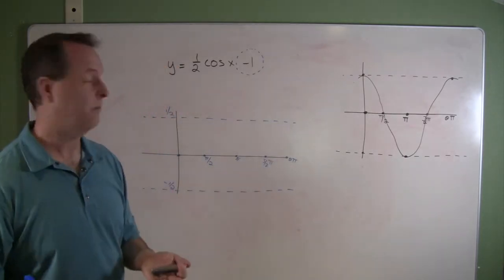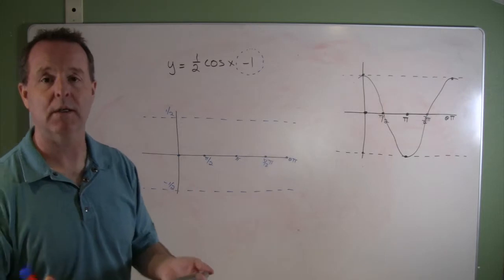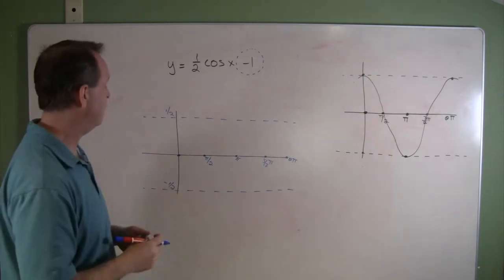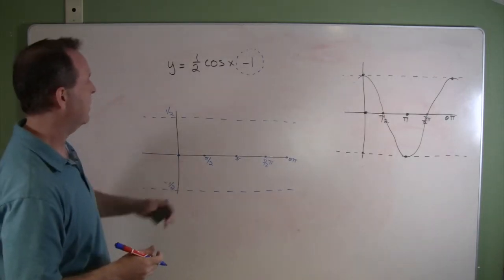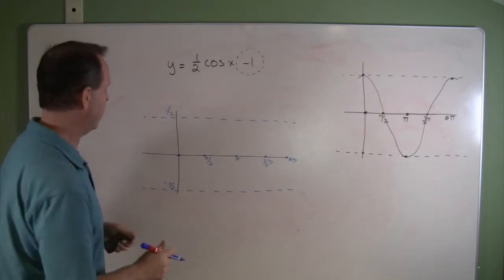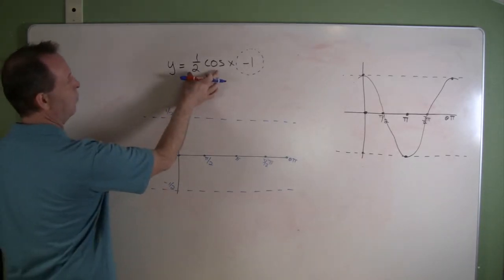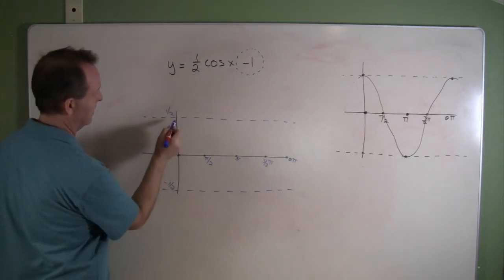So there's our four basic sections, which are marked by five points on the graph. And so now I can go ahead and graph, generally, the graph one-half cosine x. Now let's do that.